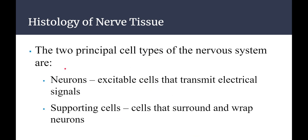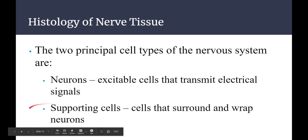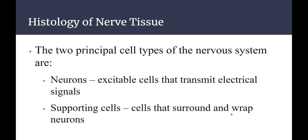Now let's take a look at the histology. There are two principal cell types of the nervous system: neurons, which are excitable cells that transmit electrical signals through the nervous system, and basically everything else — the supporting cells, or neuroglia. These are cells that surround and wrap neurons for various different reasons.